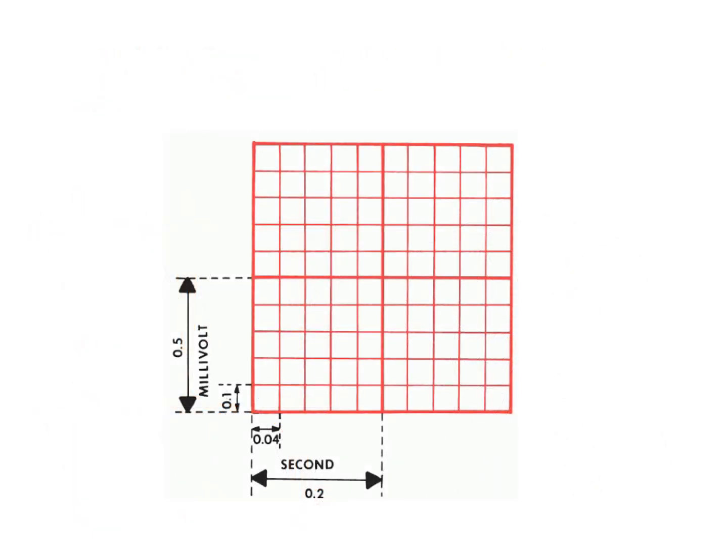The ECG has large and small boxes. The horizontal axis of a large box is 0.2 seconds, and the vertical part is 0.5 millivolts. For a small box, the horizontal plane is 0.04 seconds and the vertical is 0.1 millivolts.